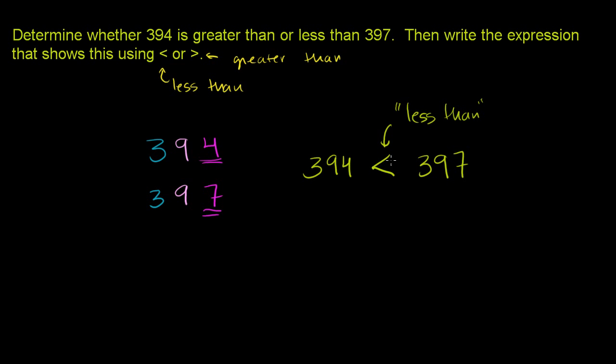We could also write it the other way. We could write 397 is greater than 394. Once again, the bigger number is on the side that this little thing is opening onto.